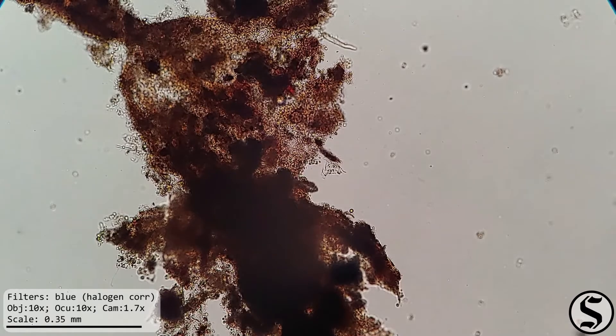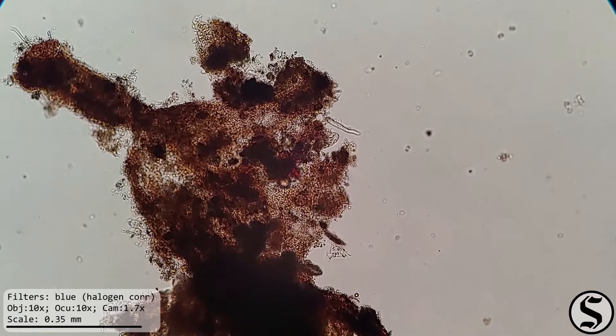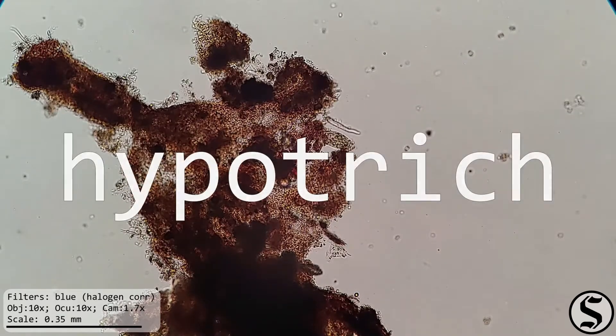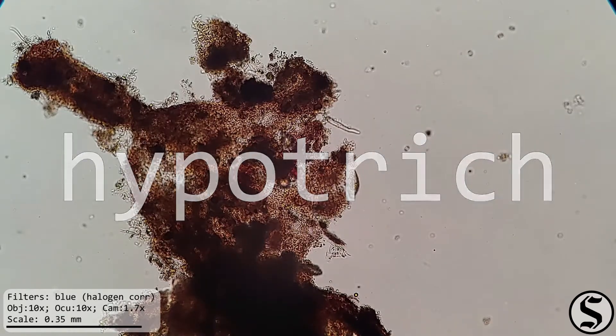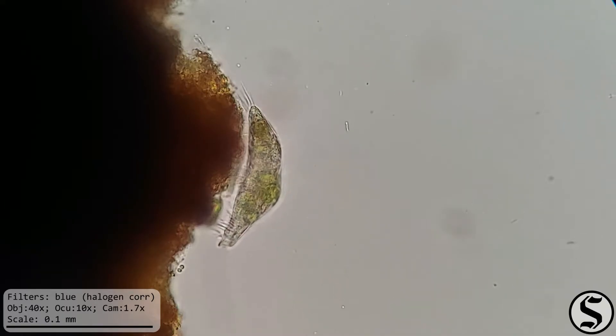And indeed, zooming in we can recognize that these are our old friends the hypotrix. If you recall, that's the Greek hypo for under and thrix for hair. This zoomed-in view is really giving us a good show of why they're called under hairs. These particular ciliates have plenty of cilia on their underside that they use to explore the world around them.